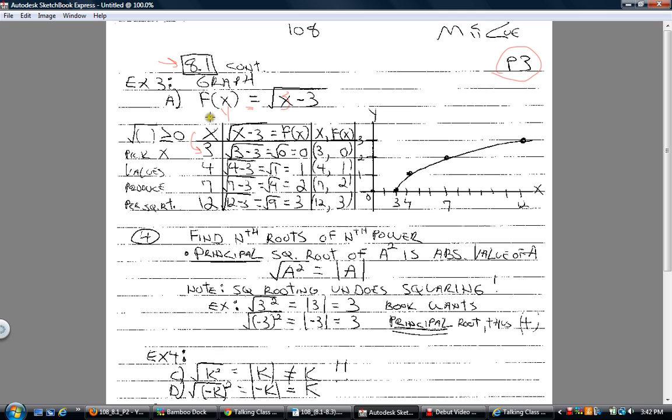Remember, your expanded XY table. Input, process, here's your output, IPO, and write the x comma y ordered pair. Notice I have f of x in there. And go ahead and plot. So you put a 3 in. 3 minus 3 is 0. Square root of 0 is 0. And there's your first ordered pair, 3 comma 0.